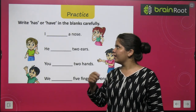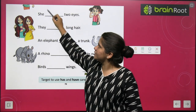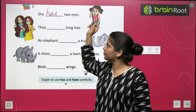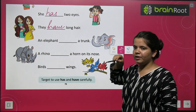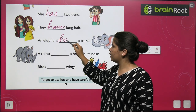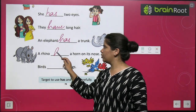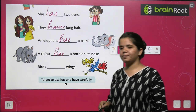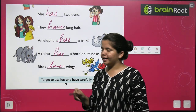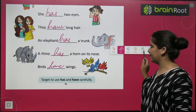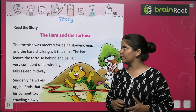We have five fingers on one hand. She has two eyes — she is singular, so we always use has with singular. They have long hair. An elephant has a trunk. A rhino has a horn on his nose. Birds have wings — birds is plural, so we use have. Is that clear everyone? Now you should understand where has and have are used.